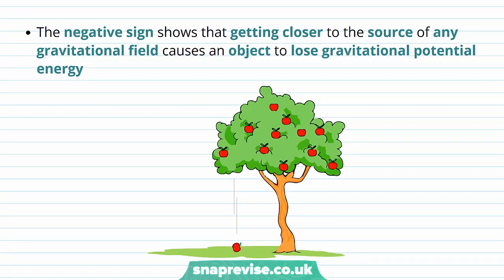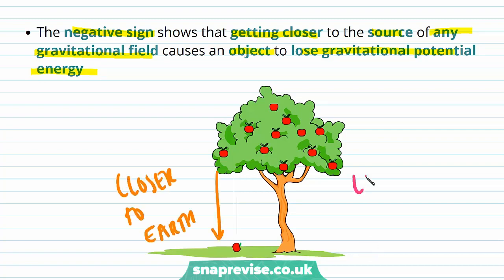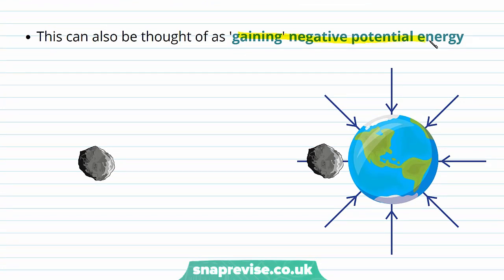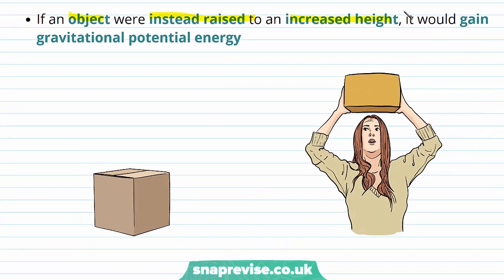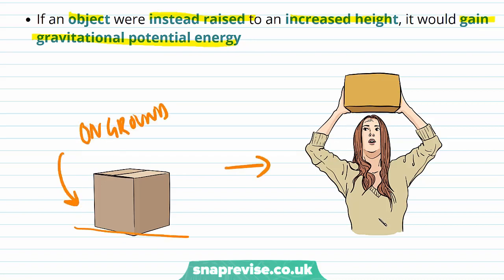The negative sign shows that getting closer to the source of a gravitational field causes an object to lose gravitational potential energy — as this apple gets closer to the Earth, it loses gravitational potential energy. We can think of this as gaining negative potential energy: at infinity an object has zero gravitational potential energy, and when moved into the field it gains negative potential energy. If an object is instead raised to a greater height, it gains positive gravitational potential energy.